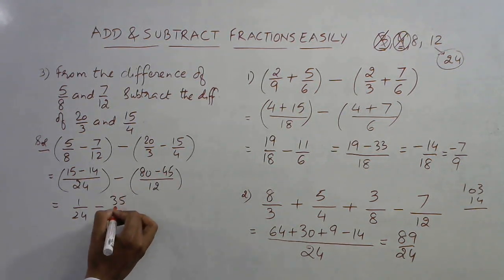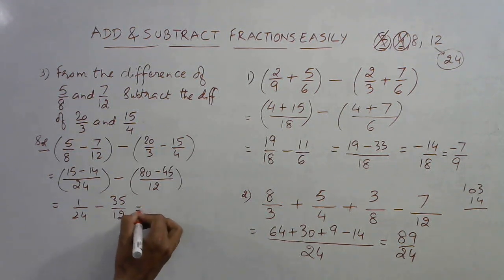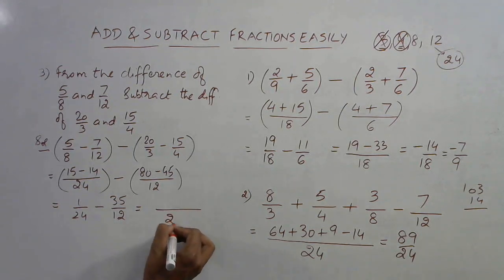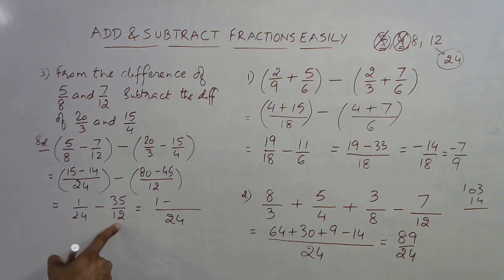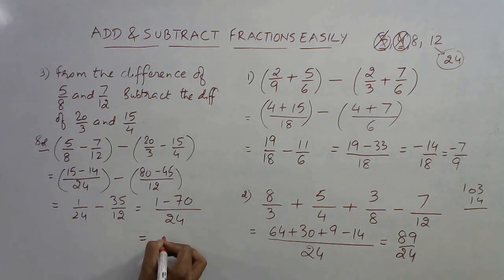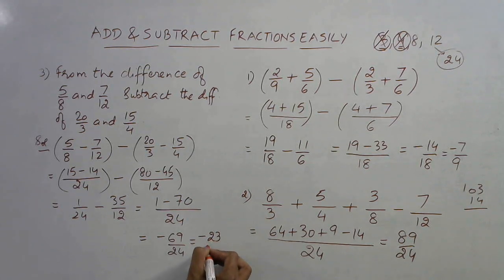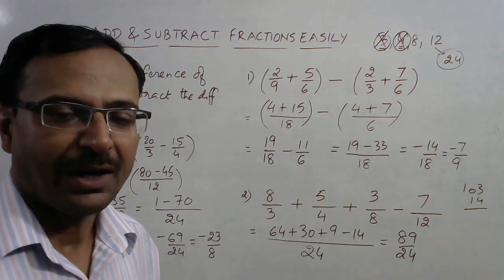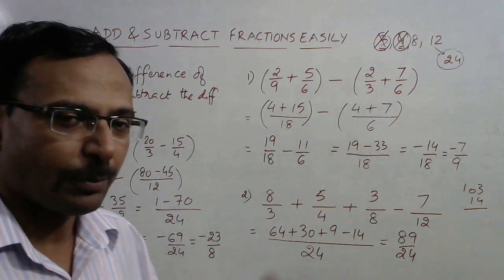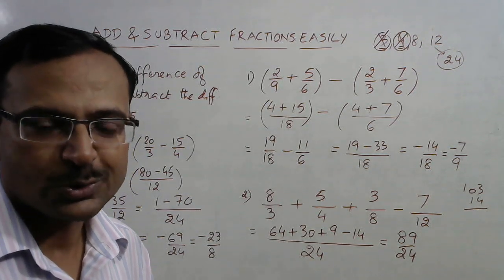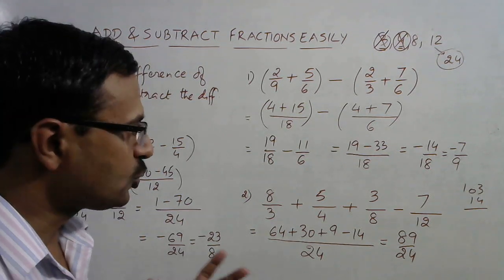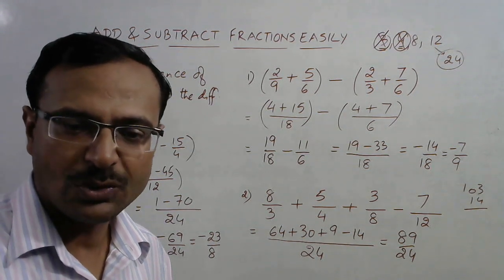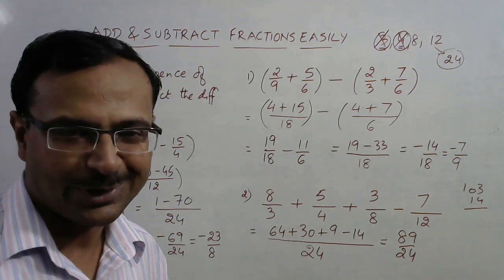So we have 1/24 − 35/12. Since 12 divides 24 exactly, LCM = 24. 1 stays as is; 24÷12=2, and 2×35=70. Result: (1−70)/24 = −69/24. Reducing to lowest form by dividing by the common factor 3 gives −23/8. So −23/8 is the required answer. Friends, share this video with all students beginning to learn LCM and HCF. If you like this video, share it with friends preparing for competitions, and don't forget to subscribe to the channel.